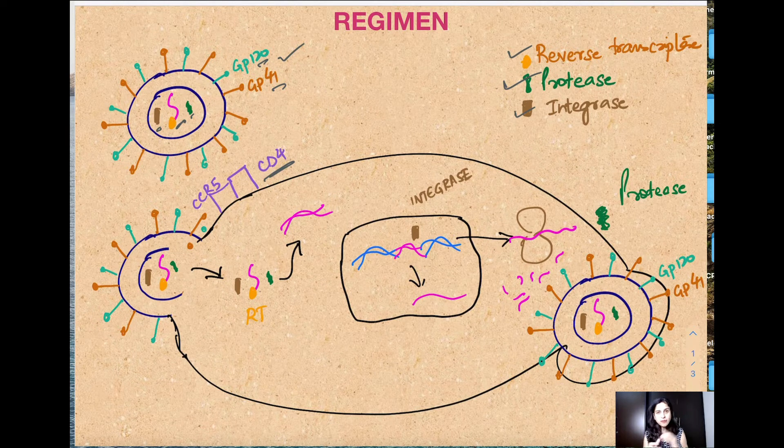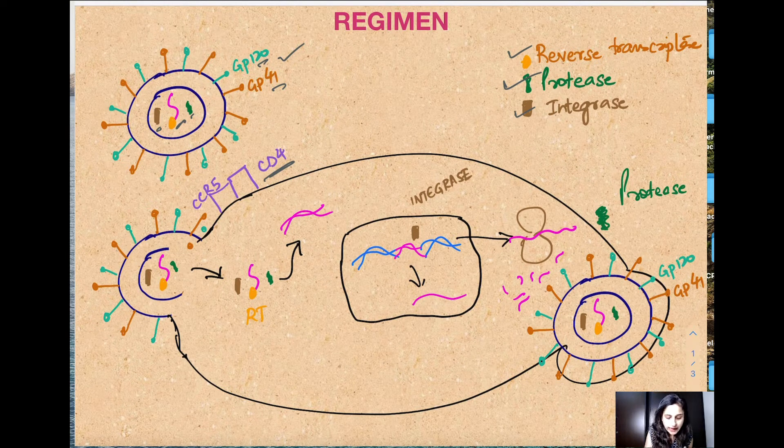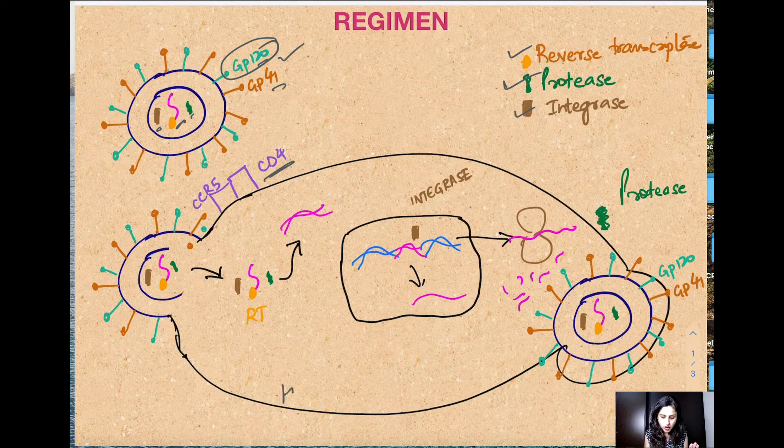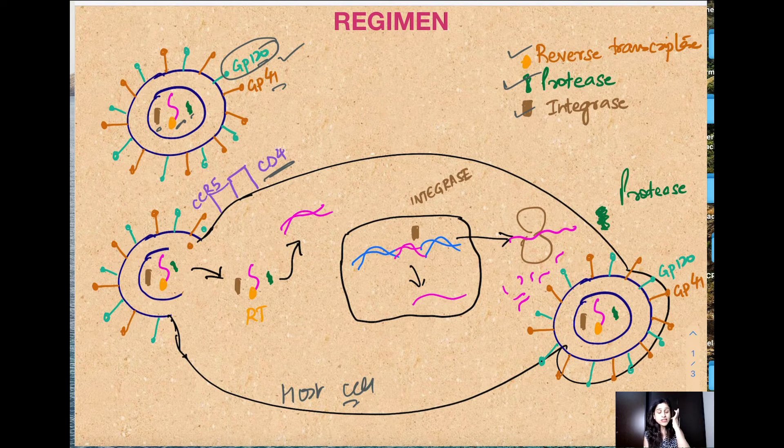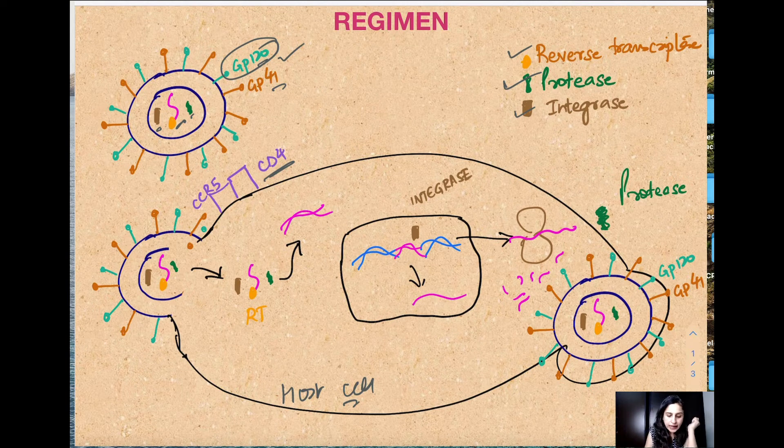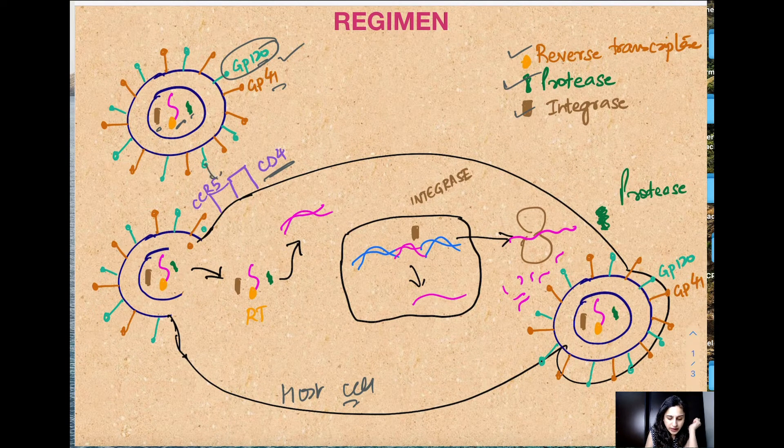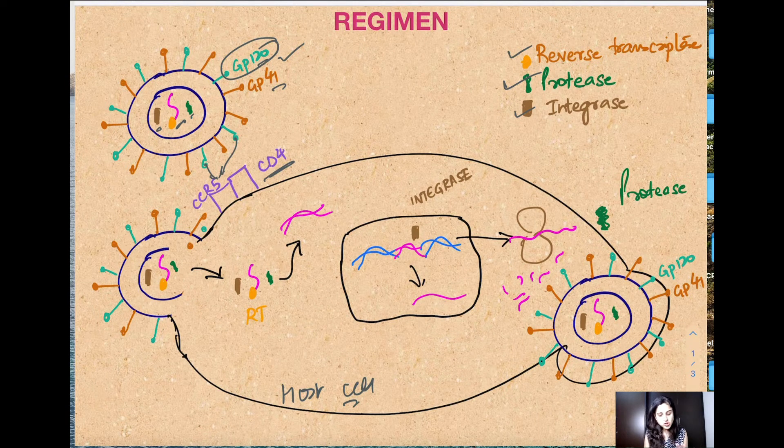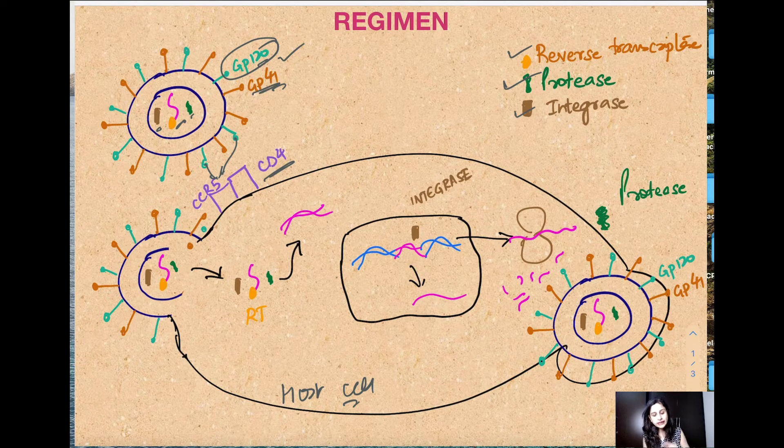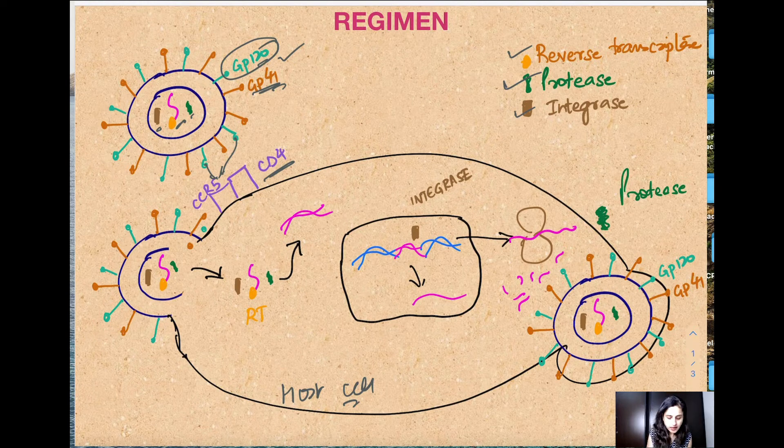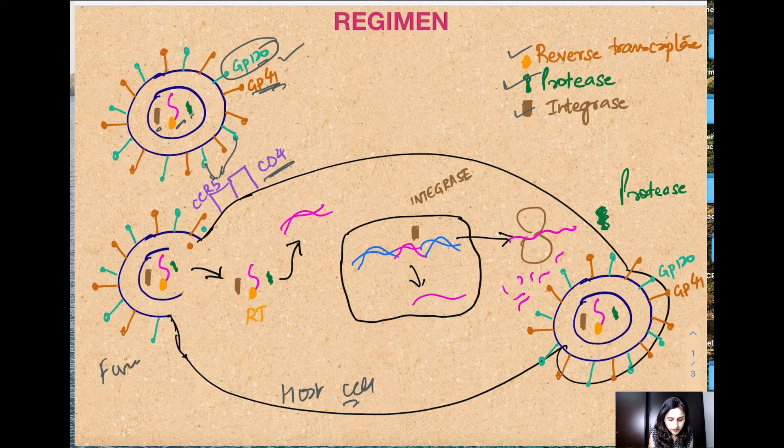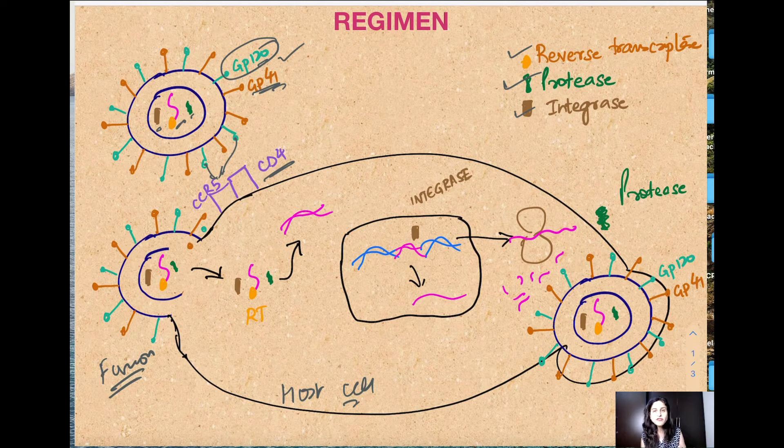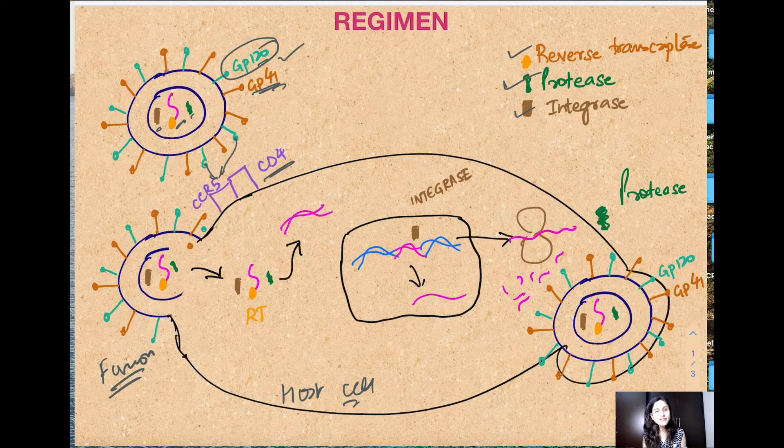The first step is your HIV virus with the help of GP120 tries to do some handshake with the host cell. The host cell has CD4 positive and this receptor present. GP120 attaches to the CCR5 and GP41 is responsible for the fusion of this virus with the cell.